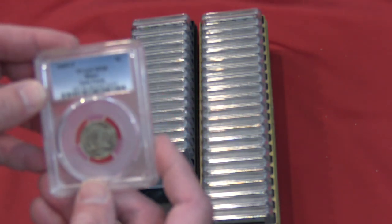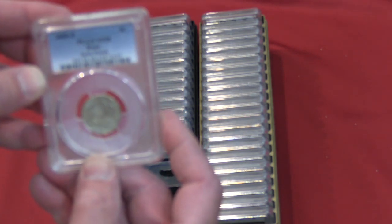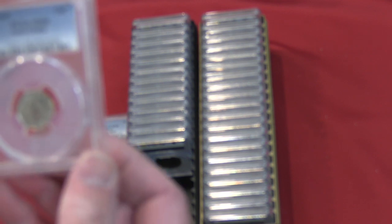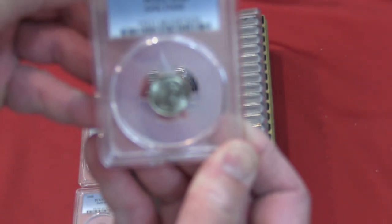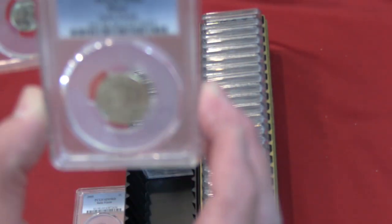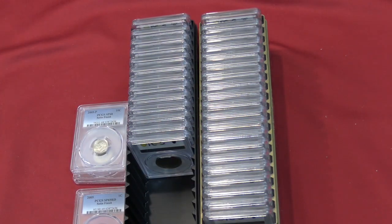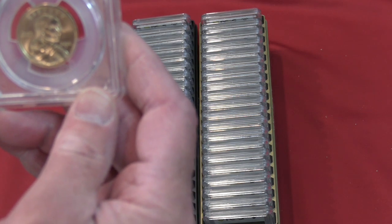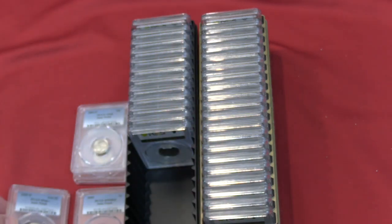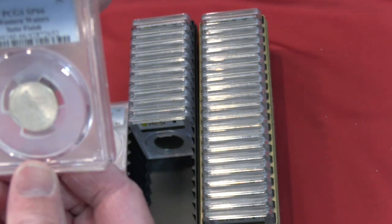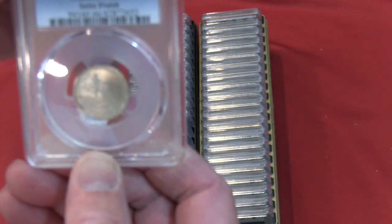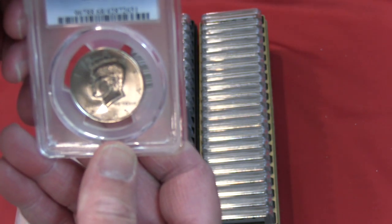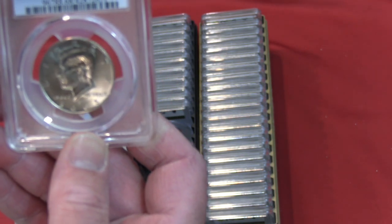There's a nickel MS-68, 2005 satin finish. Special proof 68 Bison. 2005 satin finish 68 on the dime. The Sacagawea 2005 SP-66 plus satin finish. So that's a pretty good one. 2005 PCGS SP-66 Western Waters satin finish. There's the half dollar, SP-68 satin finish.